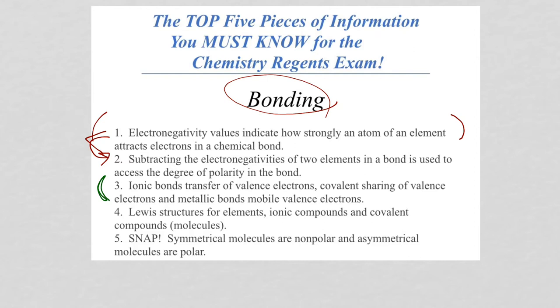So, let's take a look now at number four. Not only do you have to know what kind of bonds, but for ionic and covalent compounds, better known as molecules, you have to be able to draw what's called Lewis structures. So, first of all, you start with elements.